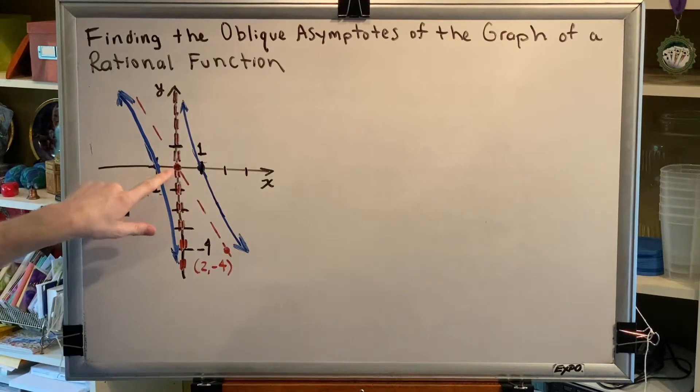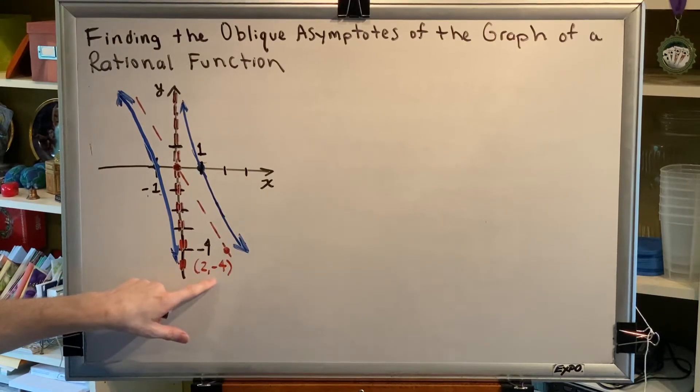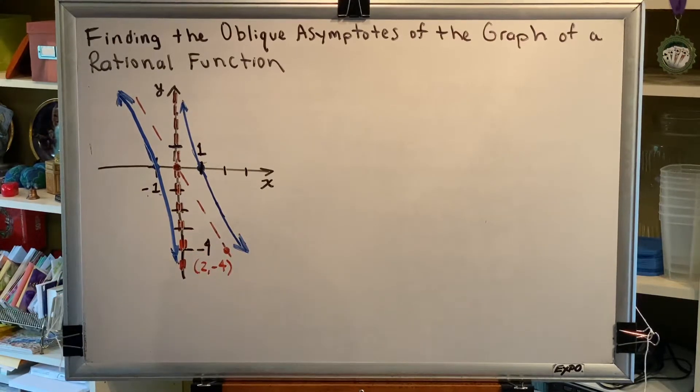One of them is the origin. We can see that our dashed line goes right through the point zero zero. The other is provided for us in the graph, which is this ordered pair two comma negative four.